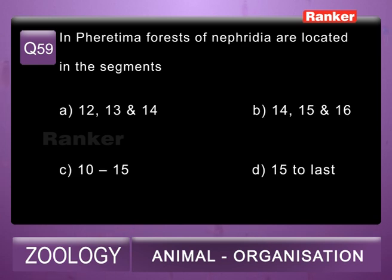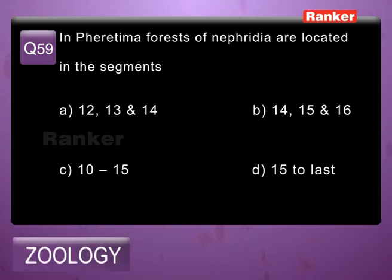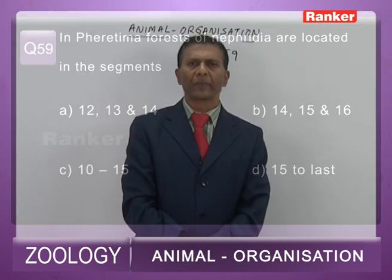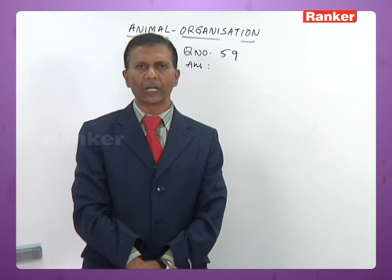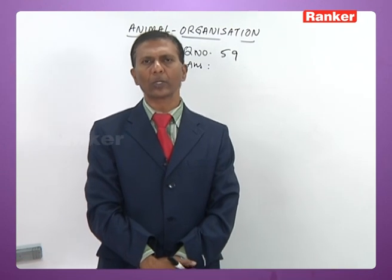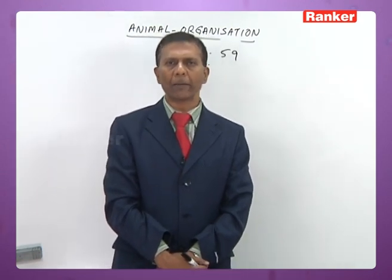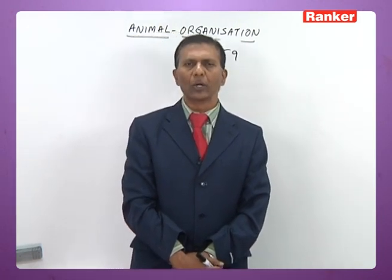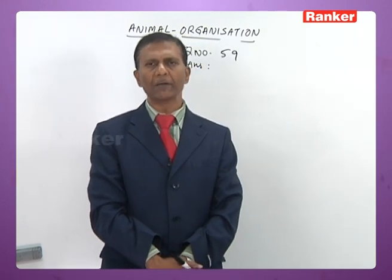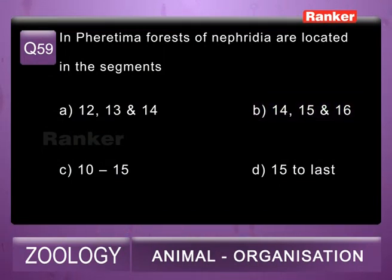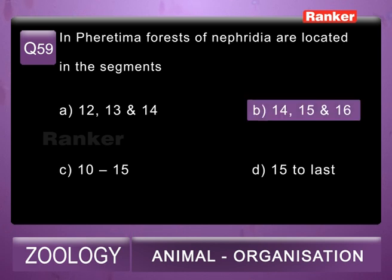Question 59: in Pheretima, forests of nephridia are located in segments A) 12, 13, 14; B) 14, 15, 16; C) 10 and 15; D) 15 to last. The integumentary nephridia present in the clitella region are referred to as forests of nephridia. In the 14th, 15th, and 16th segments (clitellum), 2000 to 2500 integumentary nephridia are present. So the 59th question correct answer is B, 14th, 15th, and 16th segments.